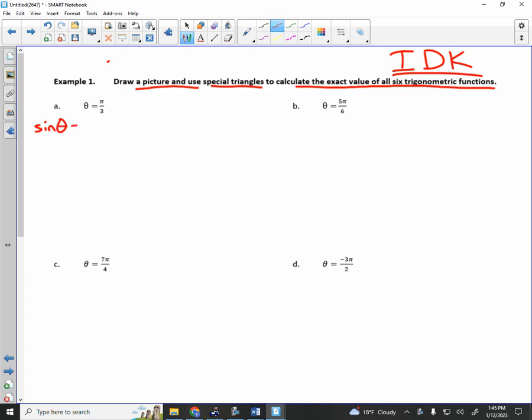So, we're going to determine all six. Draw a picture and use special triangles to calculate the exact value of all six trig functions. So we're going to do sine of theta, cosine of theta, and tangent of theta. We're going to do cosecant of theta, secant of theta, and cotangent of theta. And we're going to do that for different theta values. My theta value is pi over 3. Tell me something about pi over 3. 60 degrees. Very good. So we're going 60 degrees. And so I want to find that coordinate for a 60 degree angle.